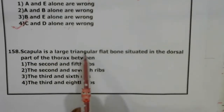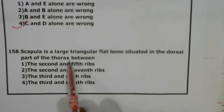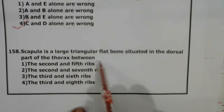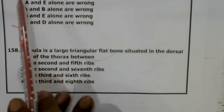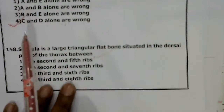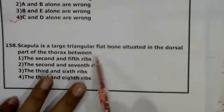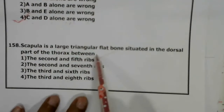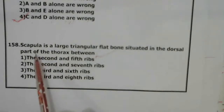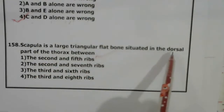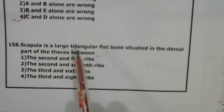Scapula is a large triangular flat bone situated on the dorsal part of the thorax — this is correct. The previous option stated ventral, which made it incorrect. It is located between the second and seventh rib.